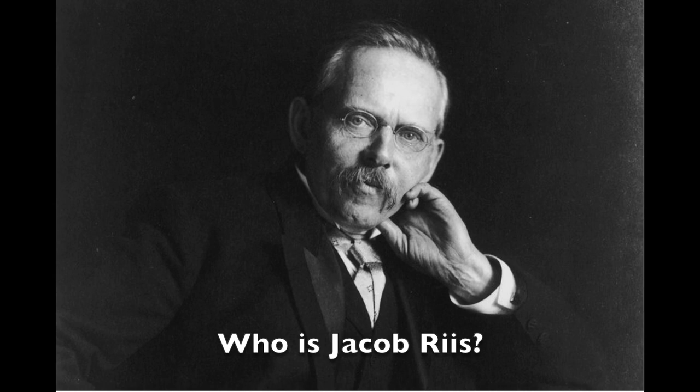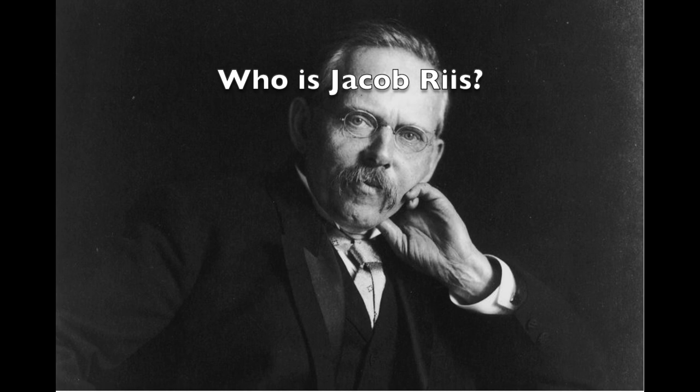Who exactly is Jacob Riis? Riis was an immigrant from Denmark who became a journalist in the late 19th century in New York City. He devoted himself to documenting how the lower class of society lived and the working conditions they had to deal with. His work carried an enormous impact in American society and struck the beginning of advances in better living and working conditions for the poor.